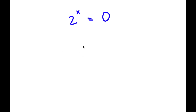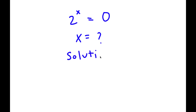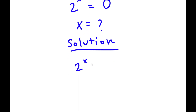In this problem, I have 2 to the power of x is equal to 0. I want to find the value of x. For my solution, I start with 2 to the power of x is equal to 0.